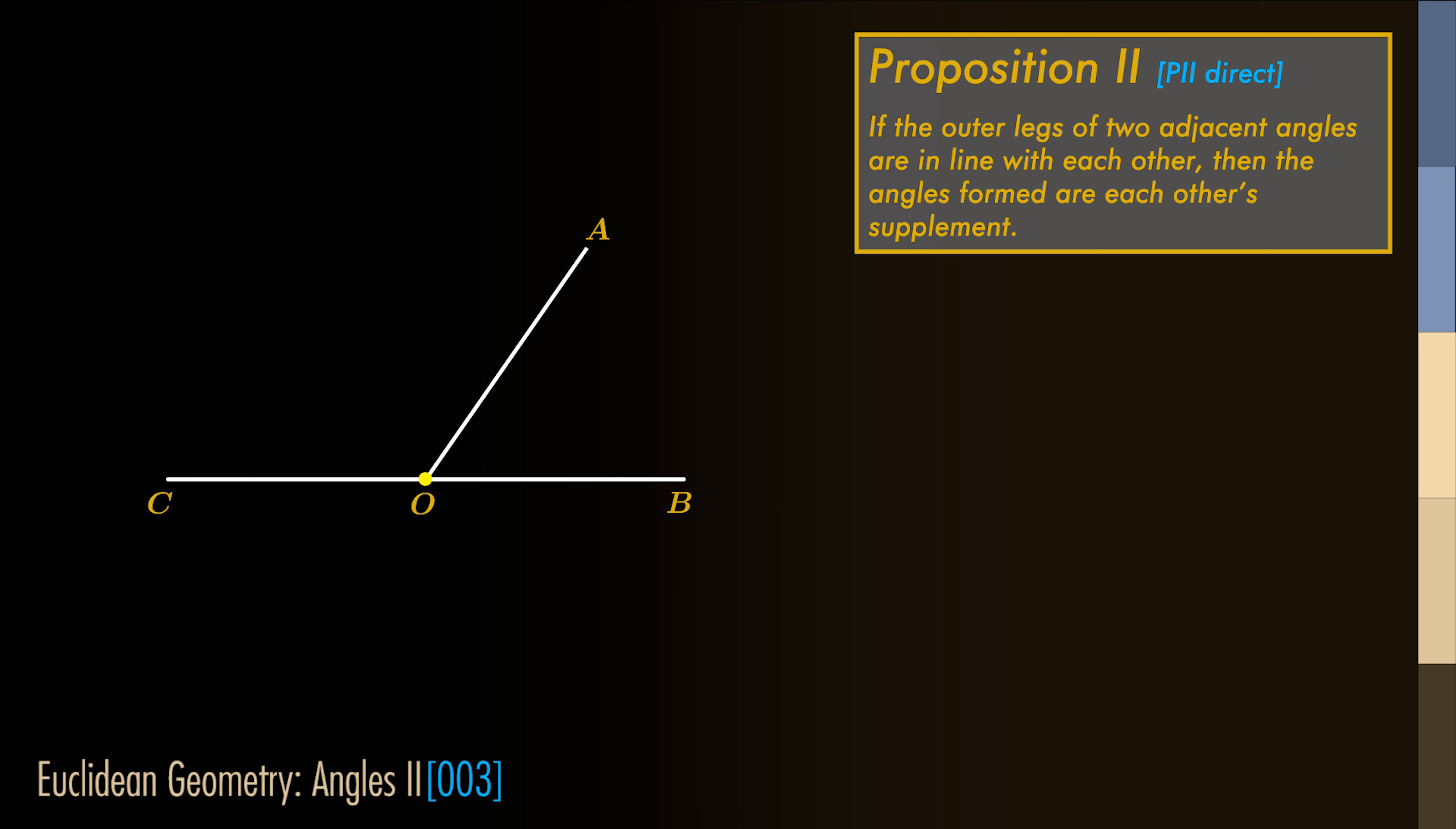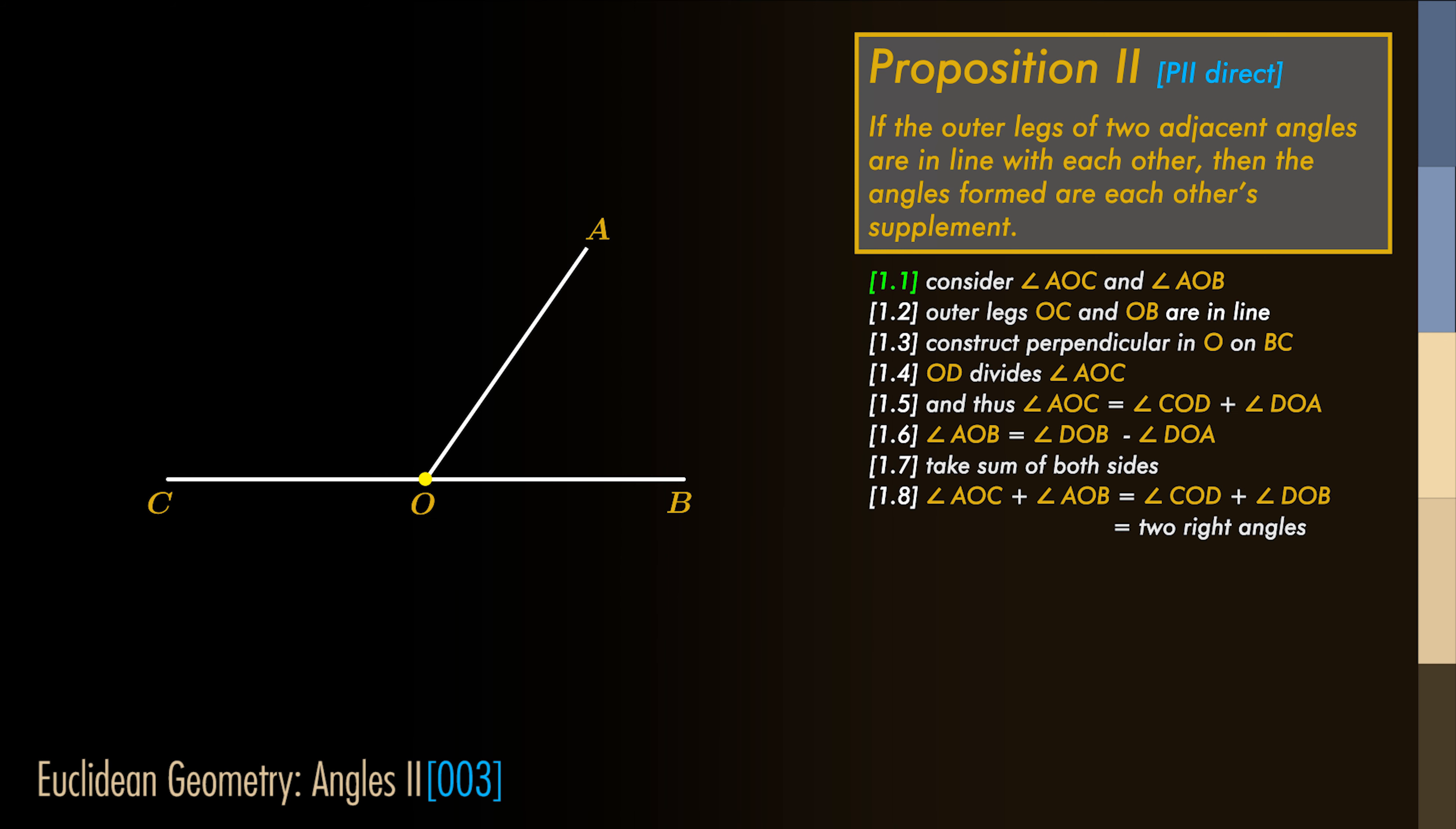Let's prove this. Take angle AOC and angle AOB. Their outer legs OC and OB are in line with each other. Now construct the perpendicular in O on BC.